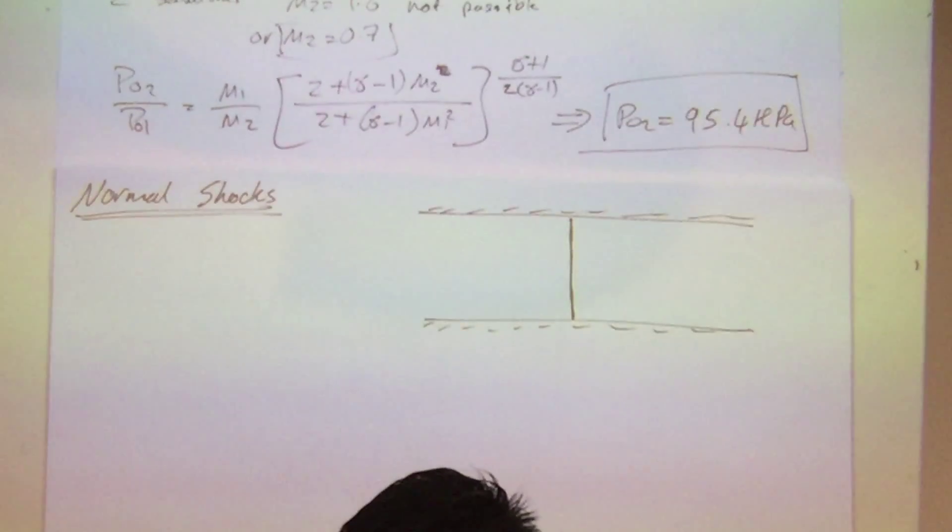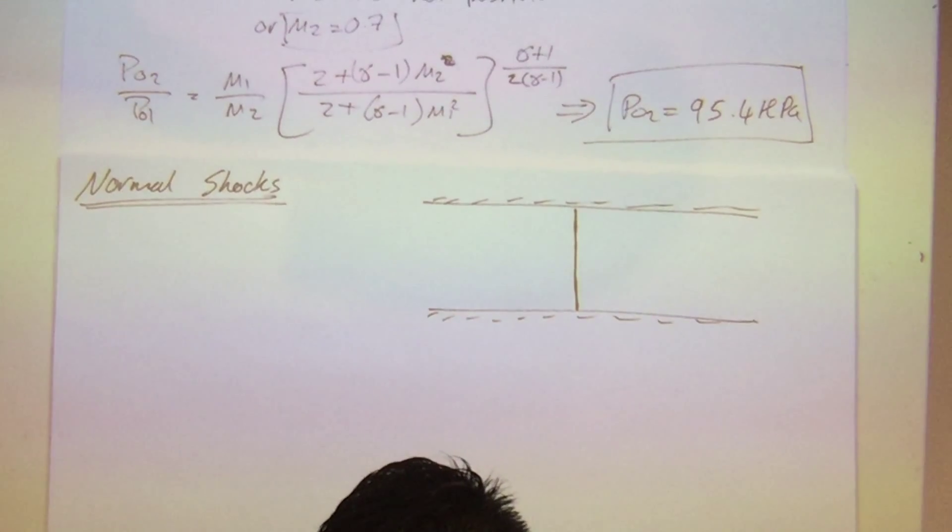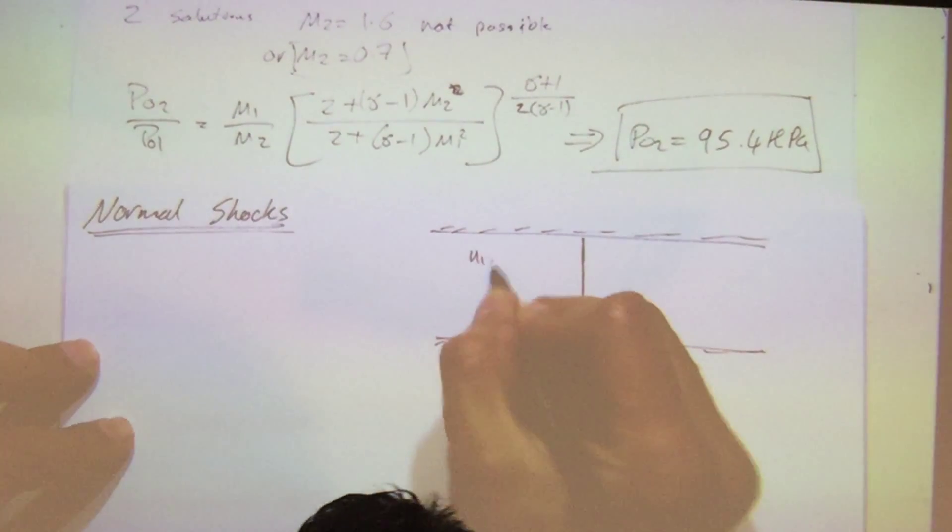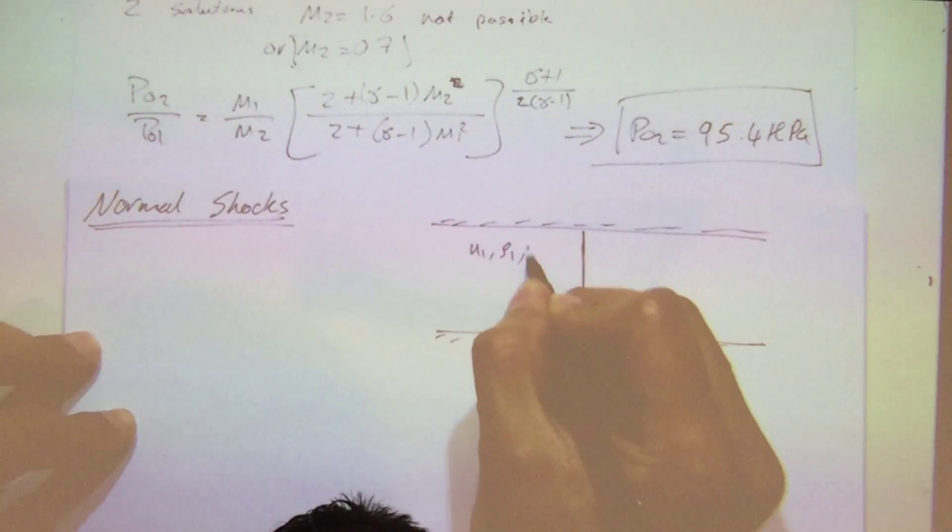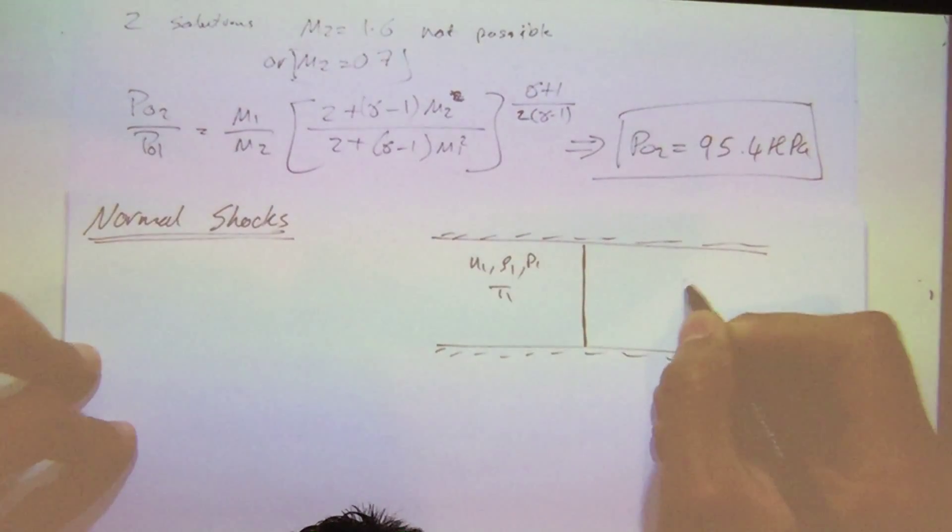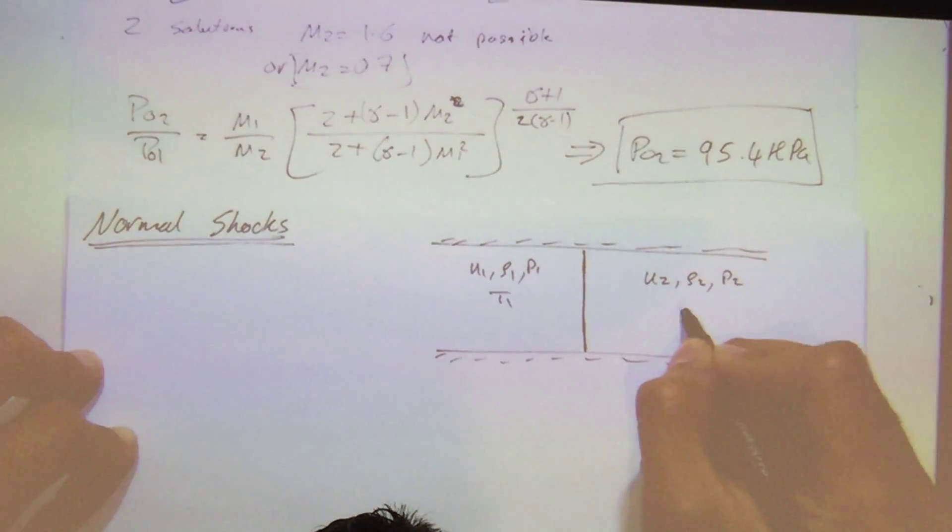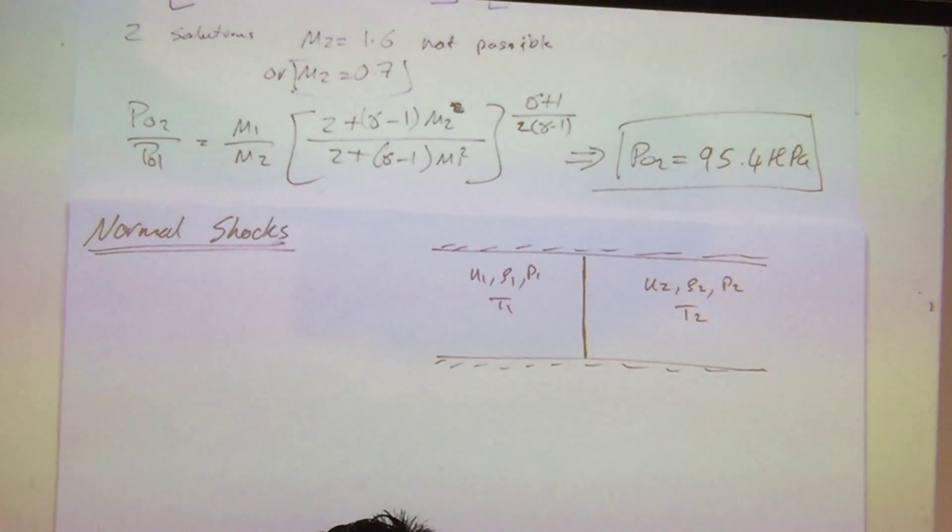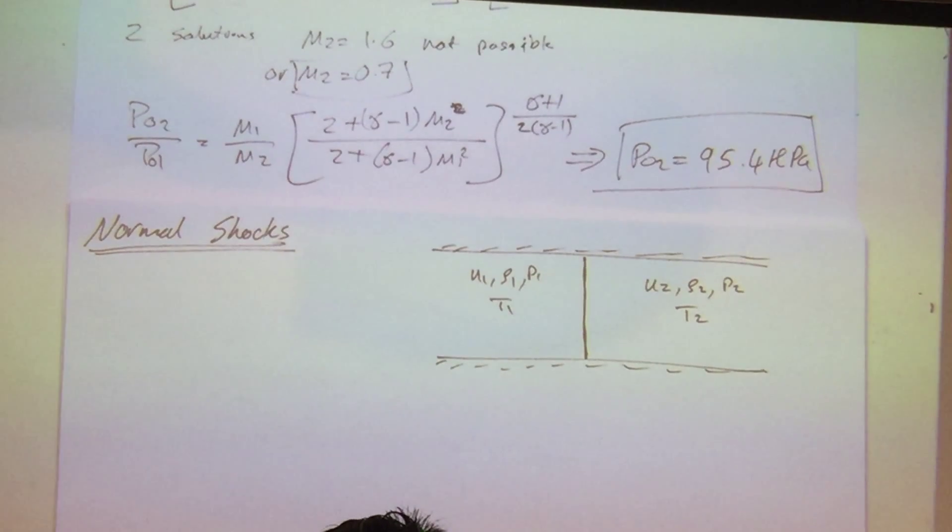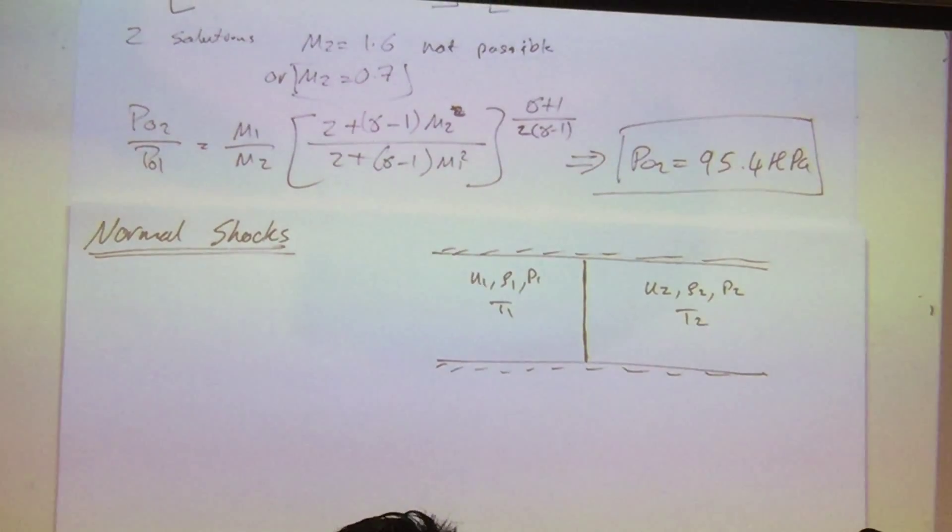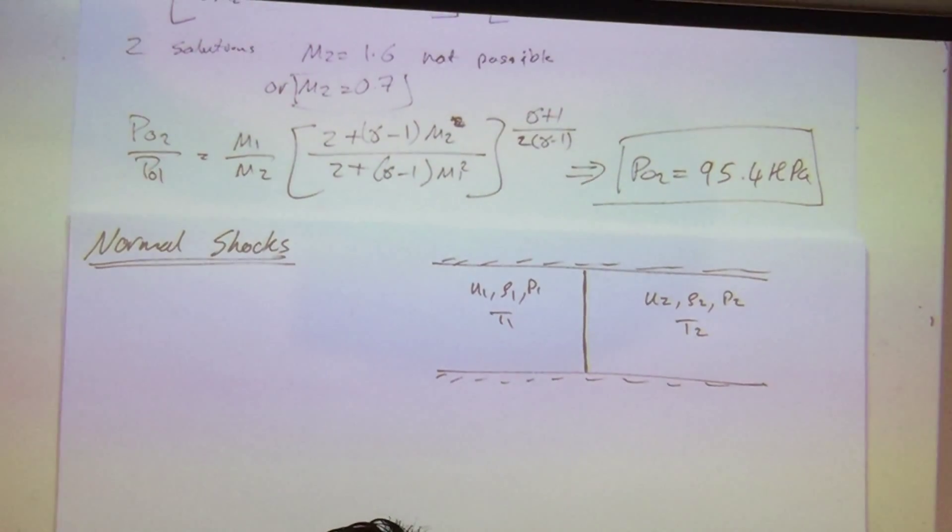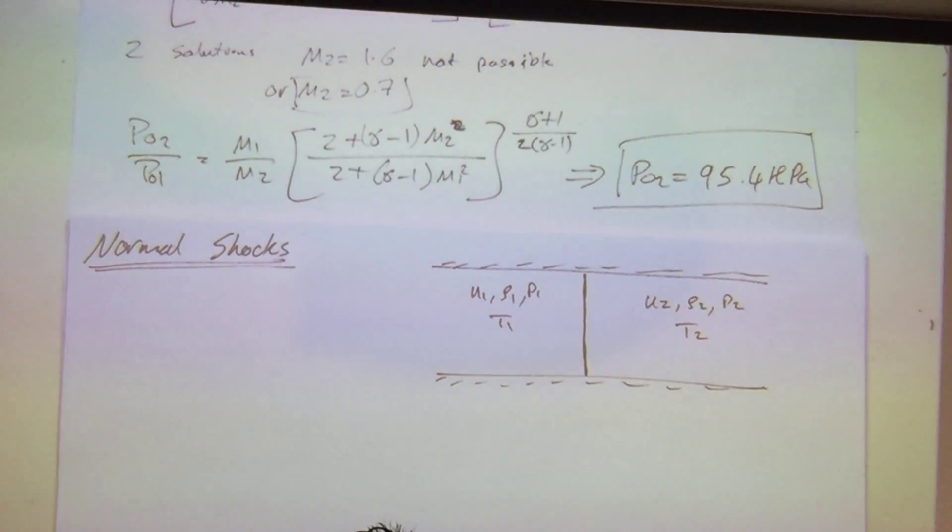And one of the things, too, we treat it as a discontinuity from a theoretical standpoint. Meaning that u1, rho1, p1, over T1, u2, rho2, p2, T2. So, we treat it as a sudden discontinuity of properties of all drastically changed to a very infinitesimal displacement.